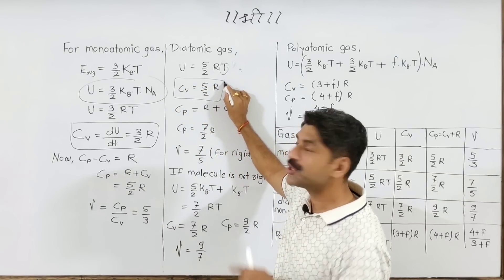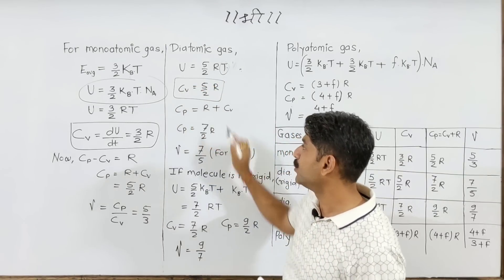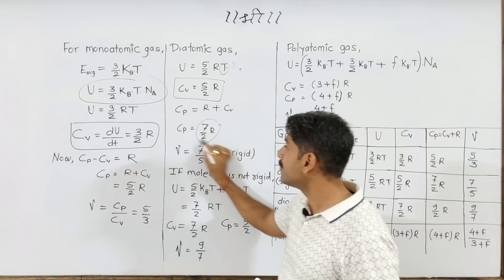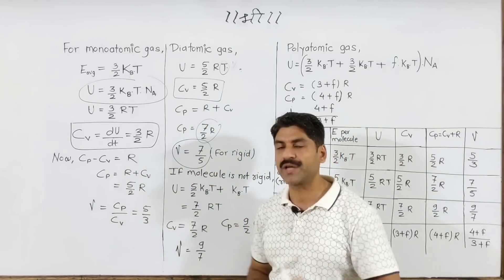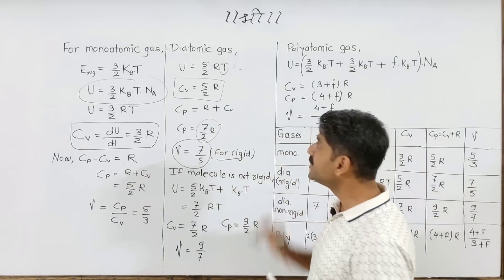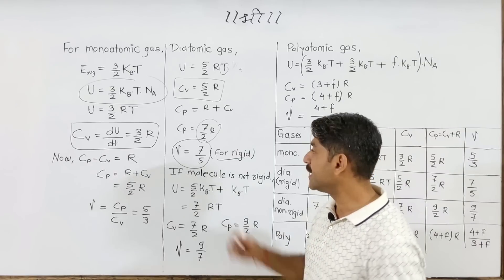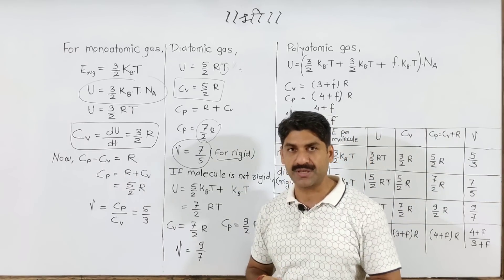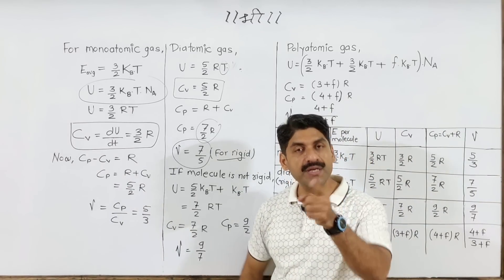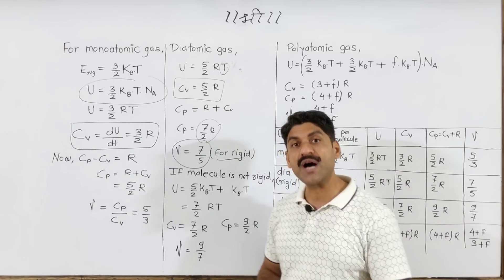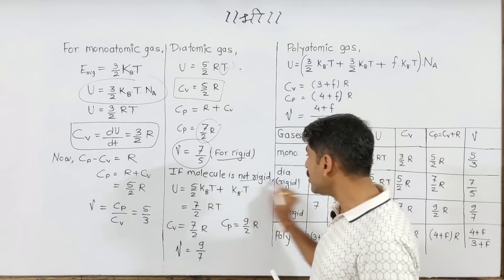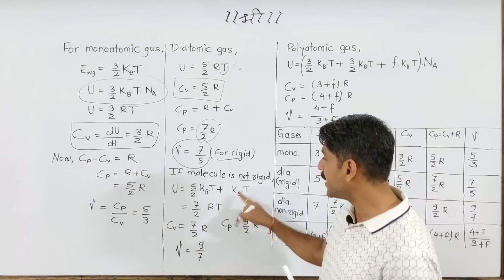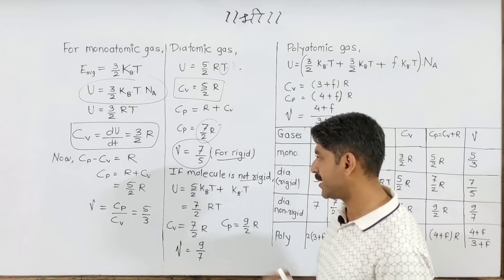For diatomic gas, Cp value is 7/2 R, and the ratio gamma equals 7/5, which is 1.4. So for rigid diatomic gas, gamma equals 1.4. This is a very common value tested in MCQs. For non-rigid diatomic gas, the energy increases so the value goes higher than 7/2 RT.